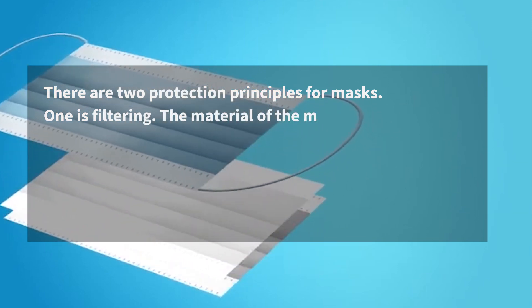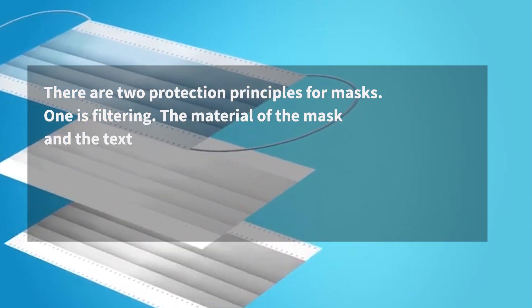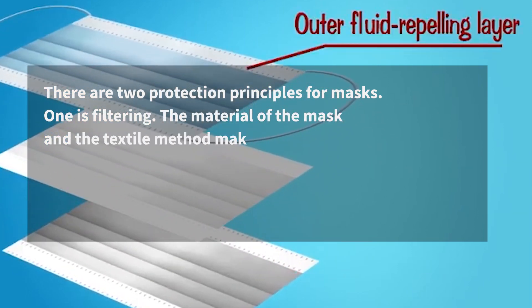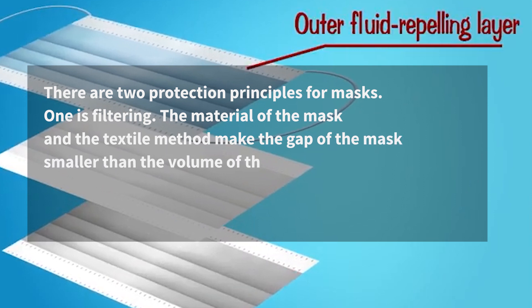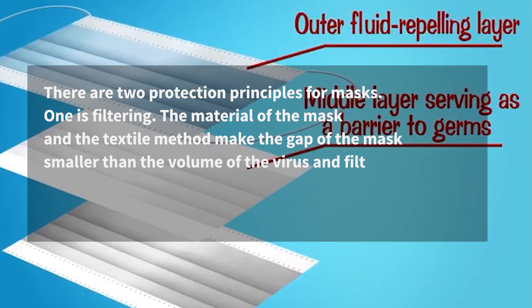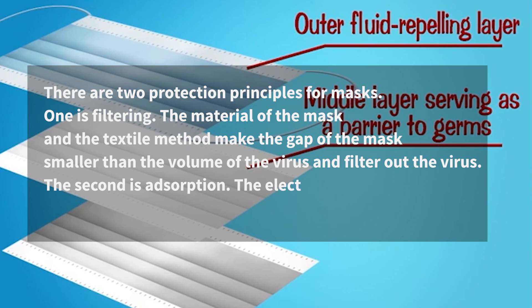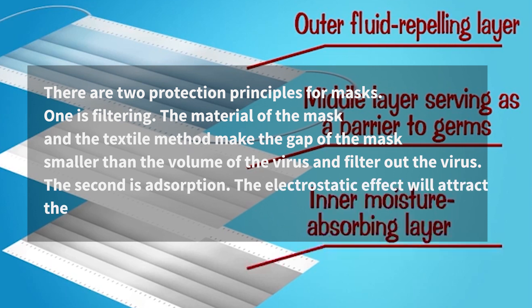There are two protection principles for masks. The first is filtering — the material and textile method of the mask make the gaps smaller than the size of the virus, filtering it out. The second is adsorption — the electrostatic effect attracts the virus to the outer layer of the mask.